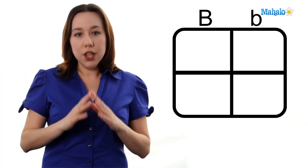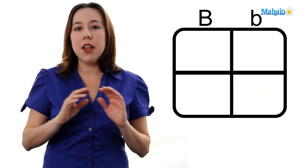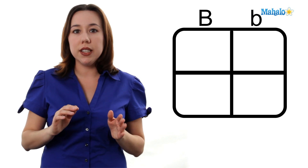Okay, so we have the father, big B, little b. He's heterozygous, meaning he has two different alleles.